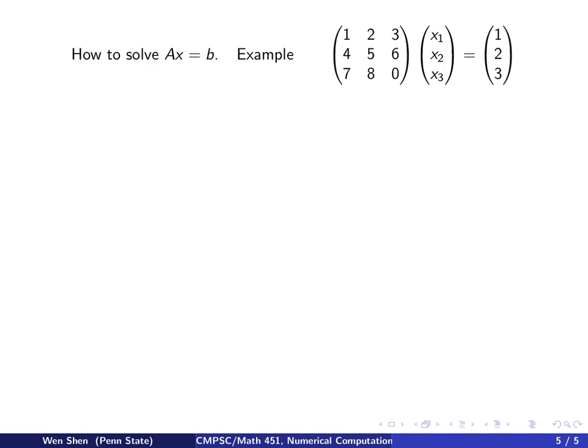Now let's go through a short example on how to solve Ax equals b. Let's take an example. Say I have a 3 by 3 matrix A which looks like that. I just randomly put in numbers 1 2 3 4 5 6 7 8 0. And this is the unknown vector x. And this is the right hand side. Let's just put 1 2 3.